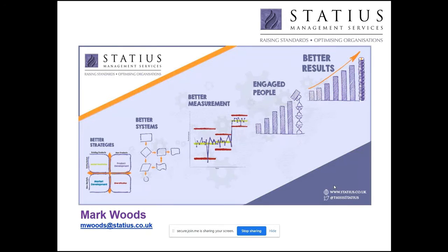Our ambition is to help you generate and deliver better strategies, better systems, better measurement, and engaged people delivering better results. As soon as we briefly sketch out the seven stages, we're going to start with the better results.